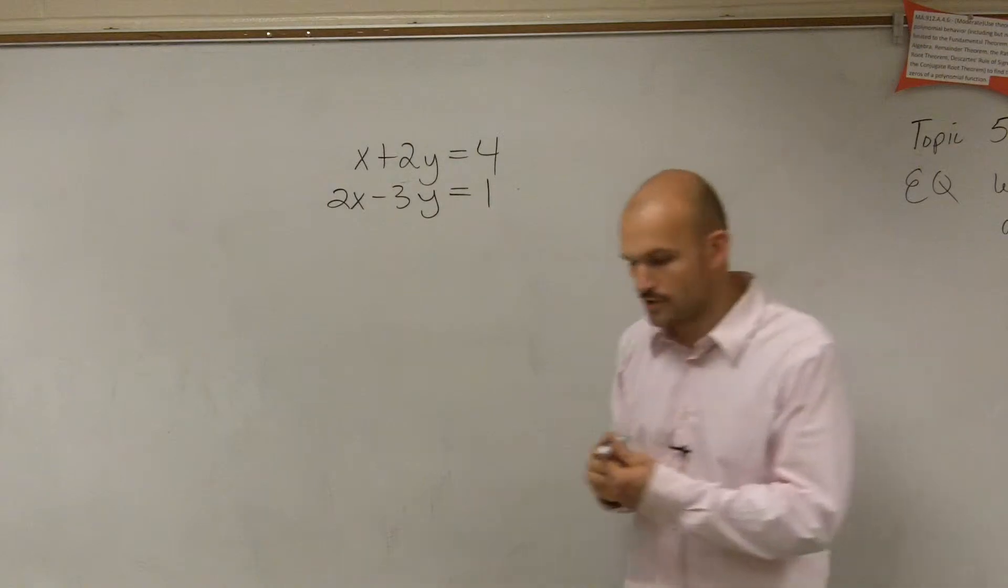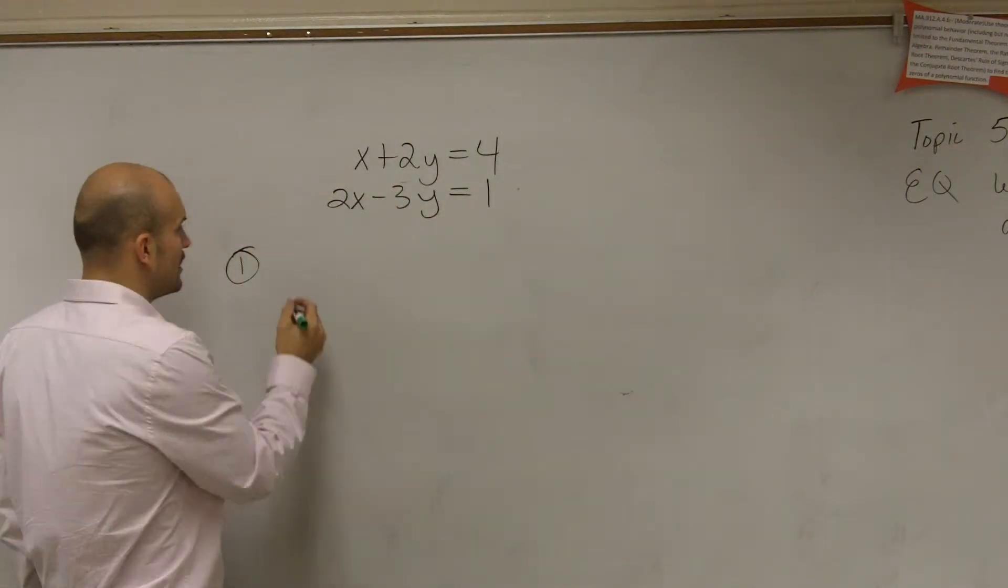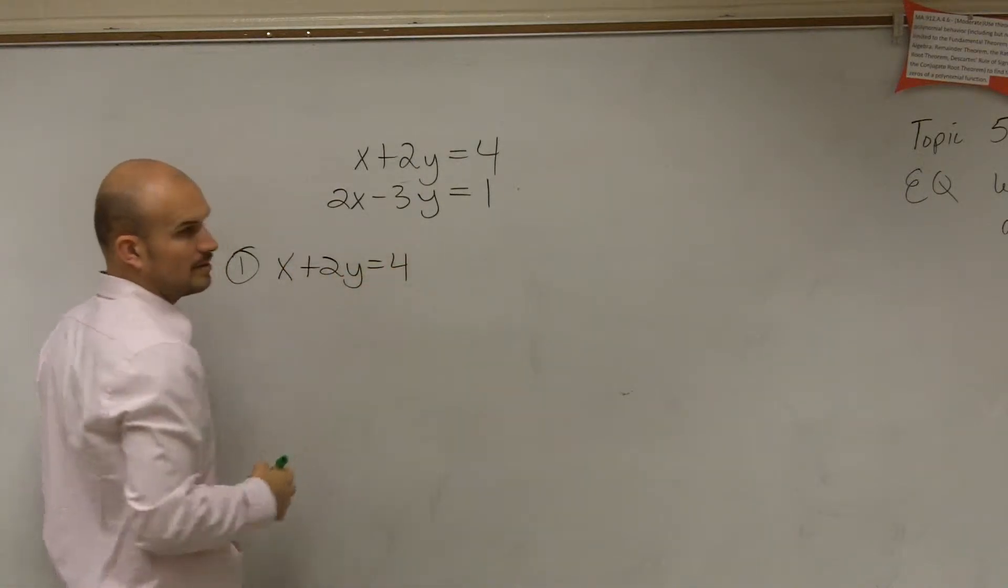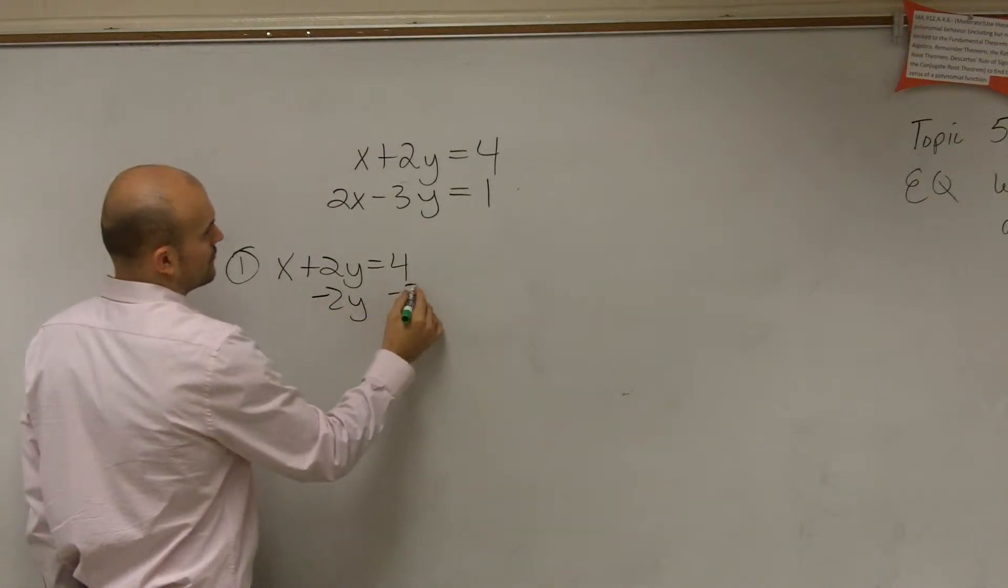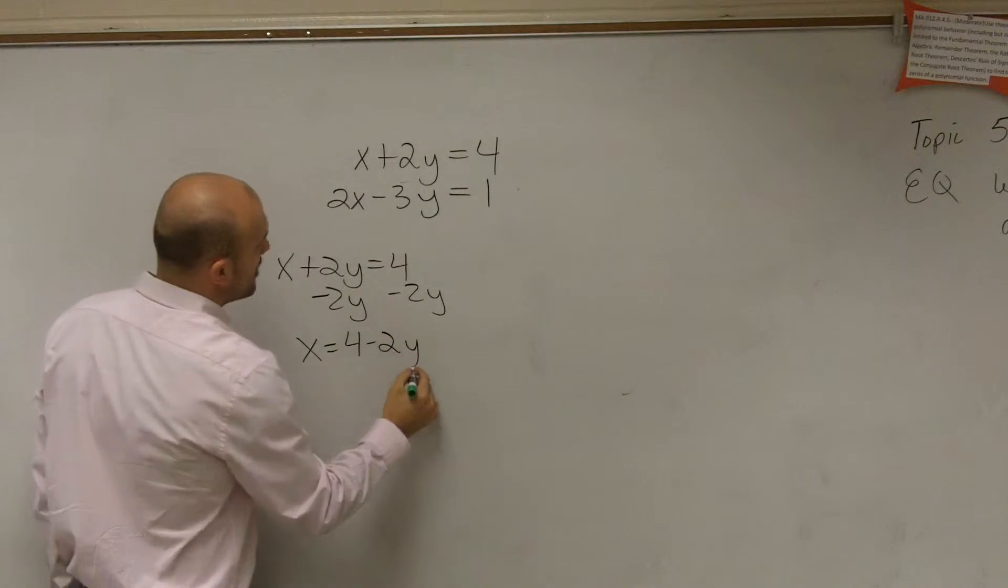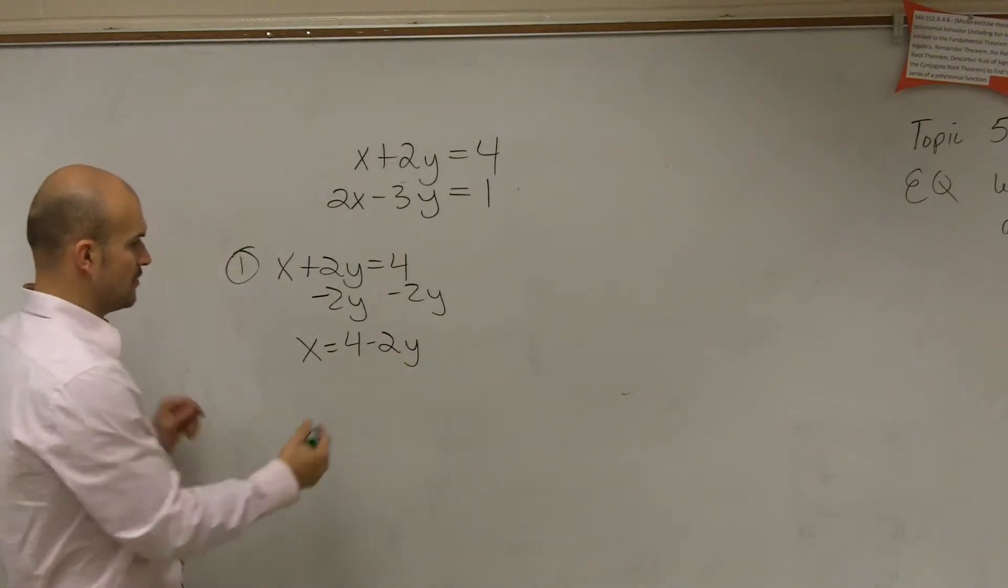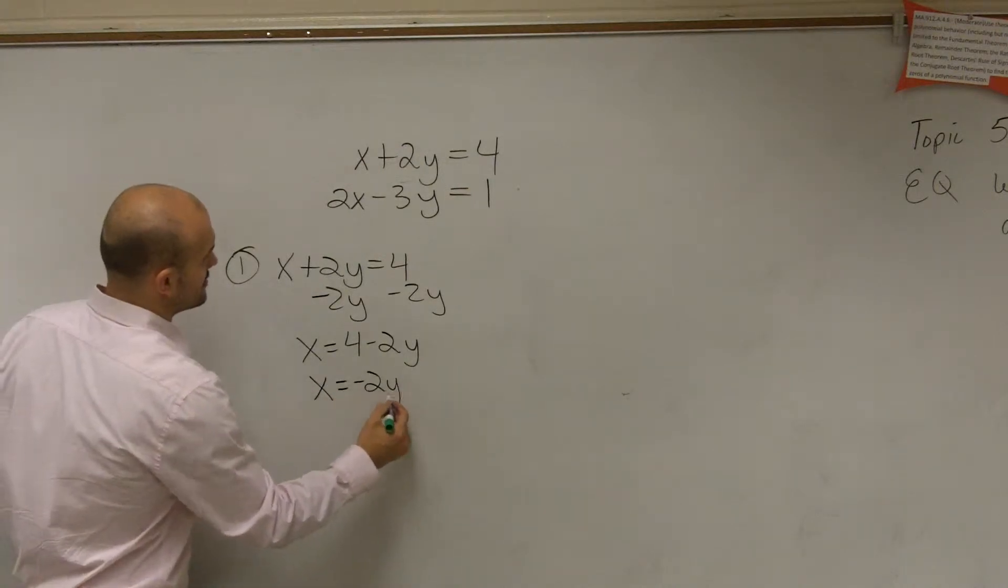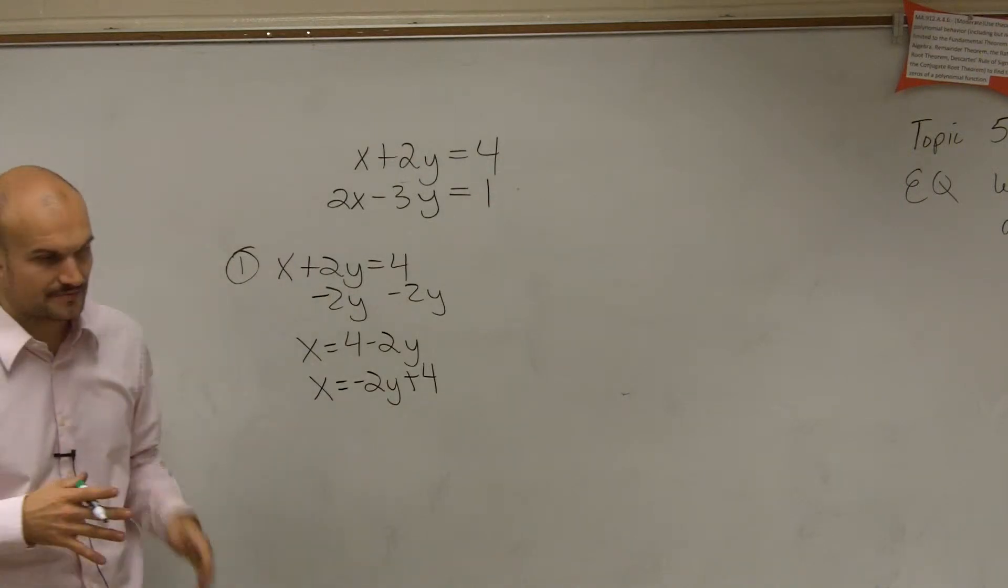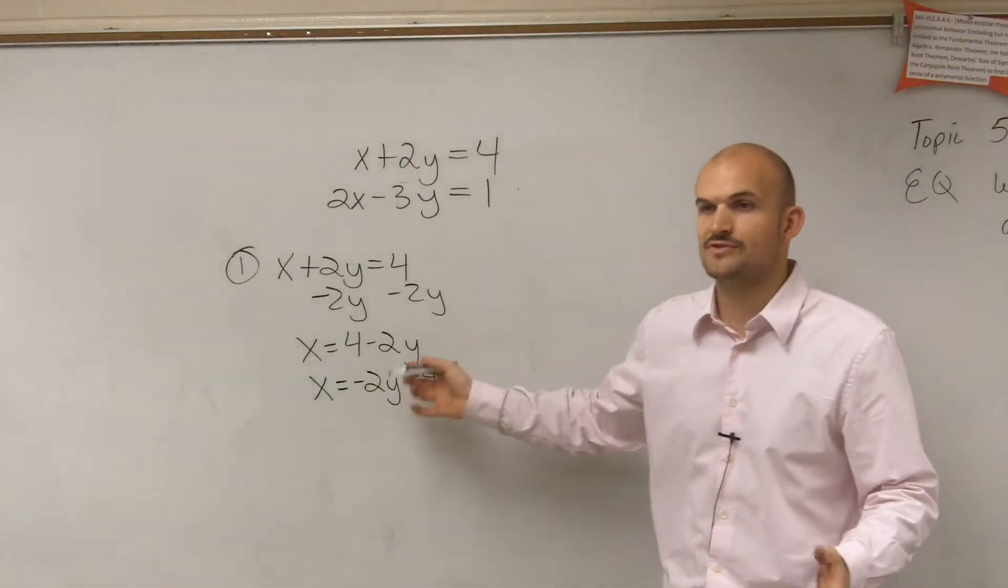So step 1, you rewrite the first equation and solve for the variable that has 1. Now remember, guys, you can't subtract 4 minus 2y. They're not like terms. So therefore, you can rewrite it. I always like to rewrite it: x equals negative 2y plus 4. You don't have to, but it's good practice. So now we know the value of x. The value of x is equal to negative 2y plus 4.